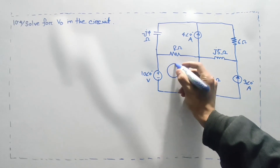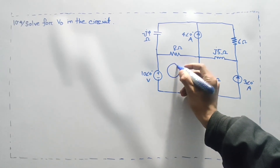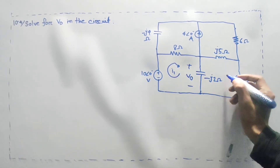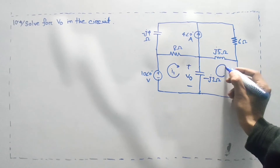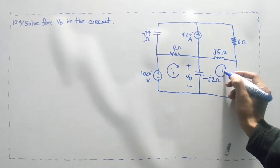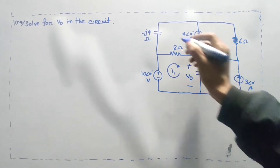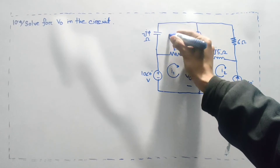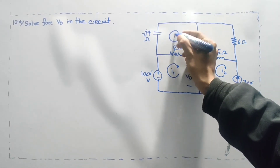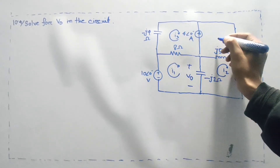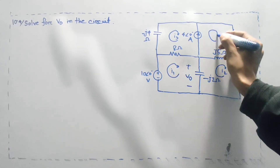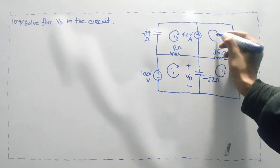Current i1, current generates current i2 current, i2, i3, i4 current.